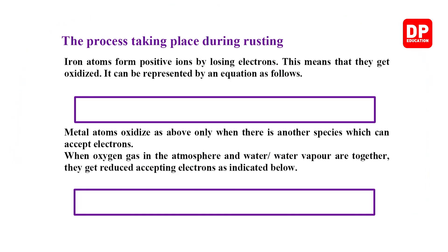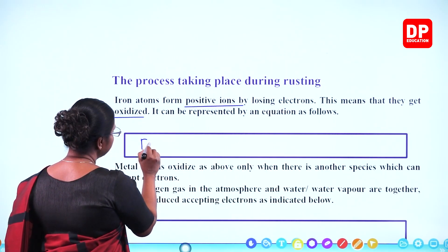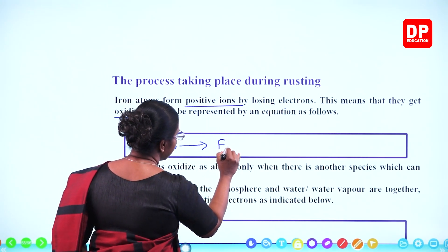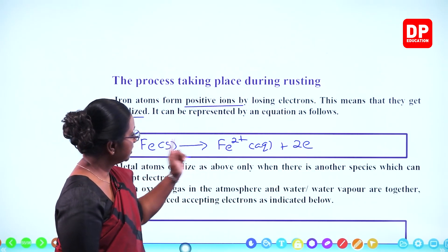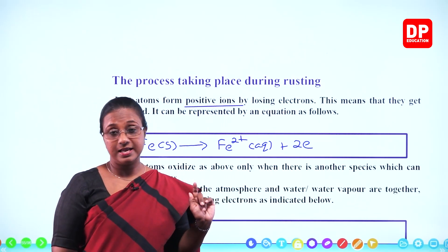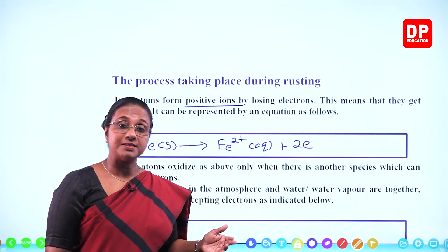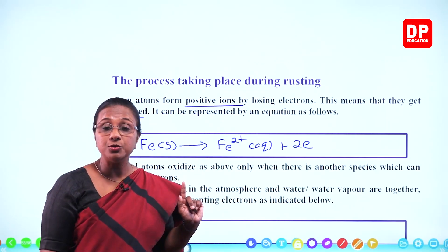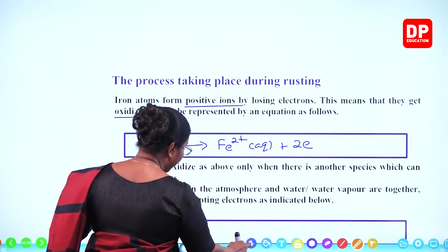Iron atoms form positive ions by losing electrons — this means they get oxidized. The equation for this is: Fe(s) → Fe²⁺(aq) + 2e⁻. These are called ferrous ions. Iron has two cations: Fe²⁺ is ferrous and Fe³⁺ is ferric. Initially, it is Fe²⁺ ions that form during the oxidation reaction. This is the oxidation half-reaction.